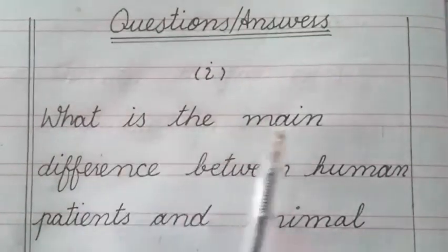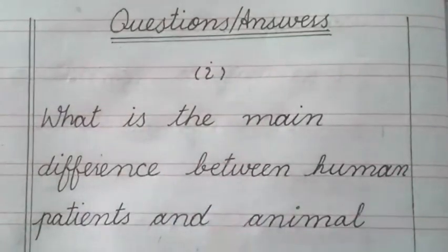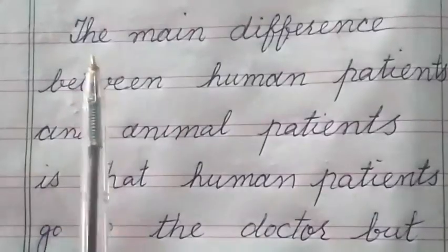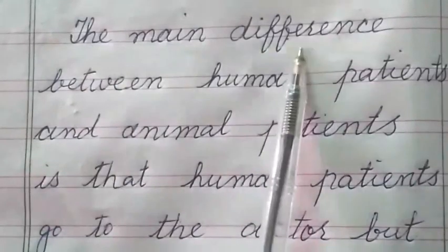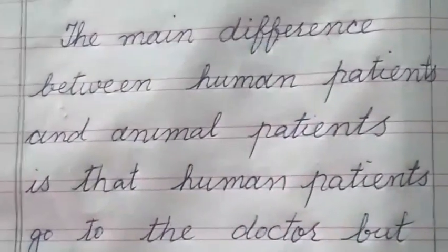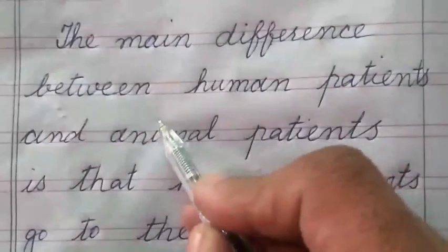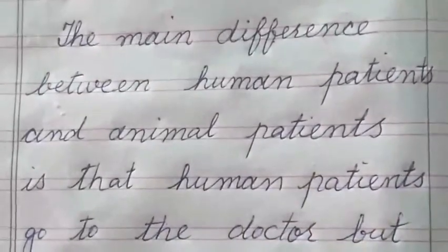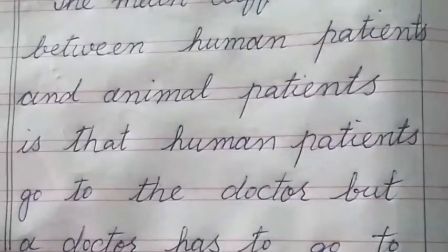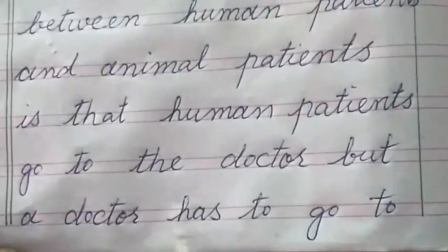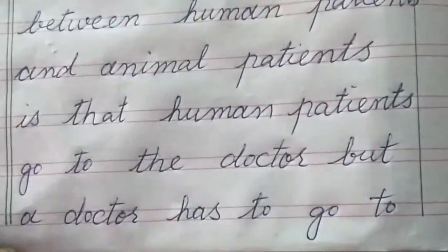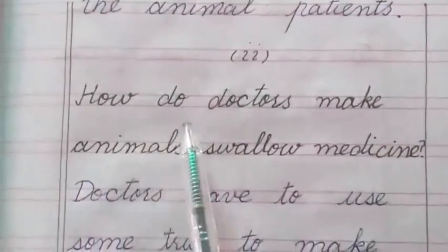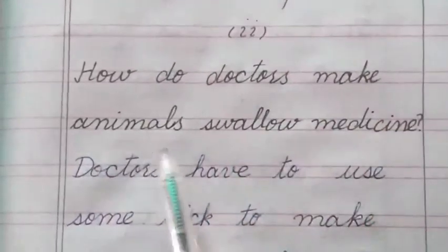Question number one: What is the main difference between human patients and animal patients? The answer is: the main difference between human patients and animal patients is that human patients go to the doctor, but our doctor has to go to the animal patients.